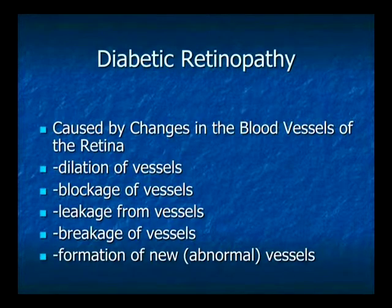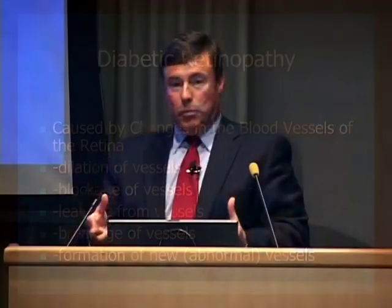In the worst form of diabetic retinopathy, the body tries to grow new blood vessels to help blood flow in the retina. But unfortunately, the body's effort is not good — these new blood vessels are very abnormal. They tend to leak a lot of fluid and bleed. So formation of new blood vessels is not a good sign in somebody who has diabetic retinopathy.